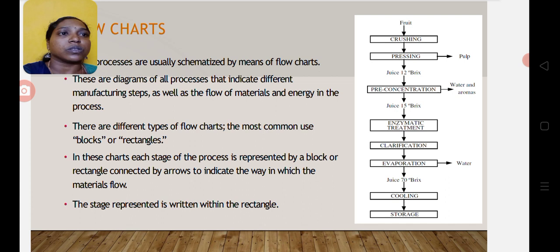Then it goes to pre-concentration, either by evaporation or heat process. From pre-concentration, we get juice at 15 Brix. It then goes to enzymatic treatment where microorganism activity takes place, and then to the clarification process to remove suspended materials in the juice.